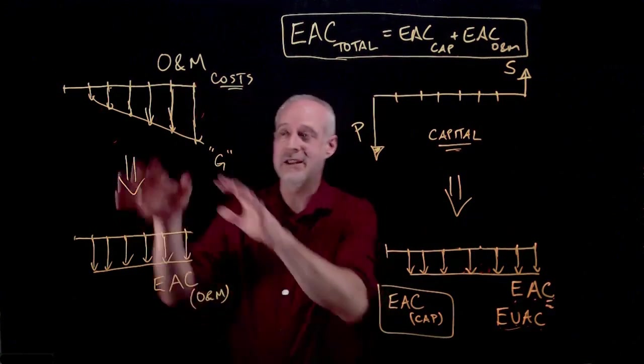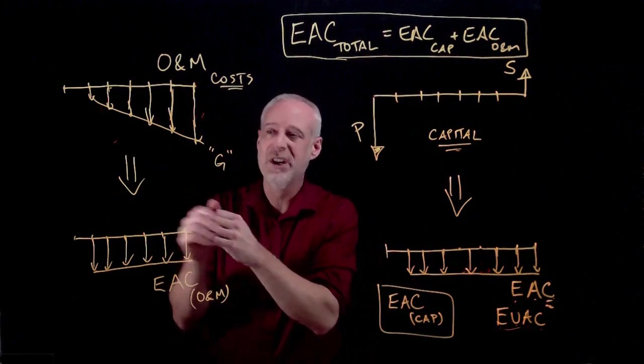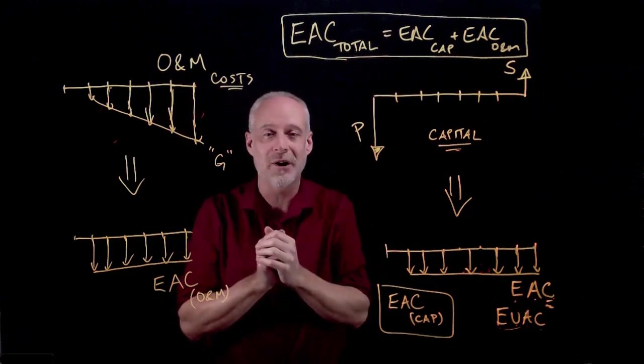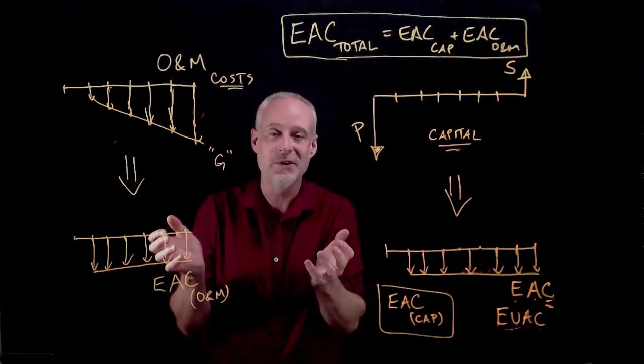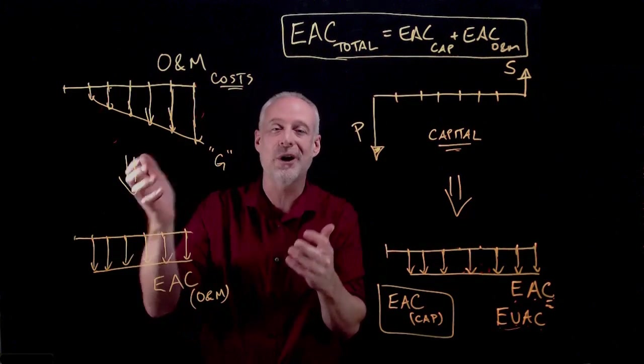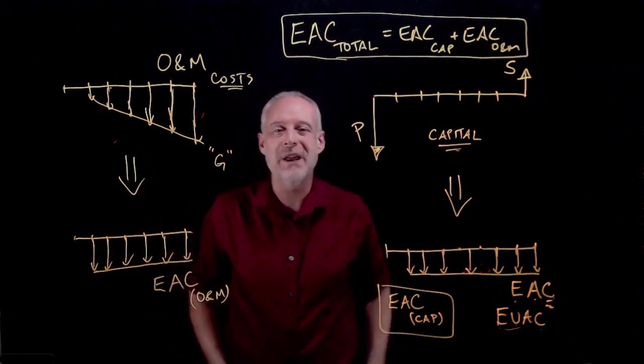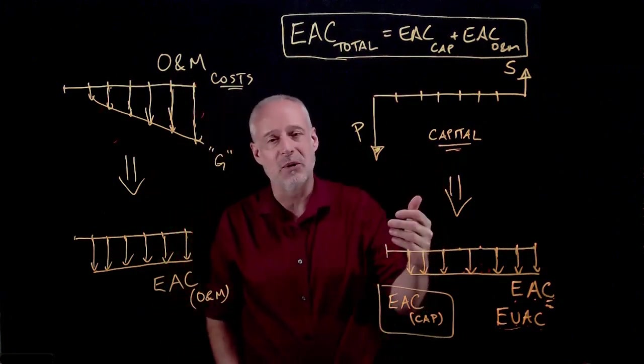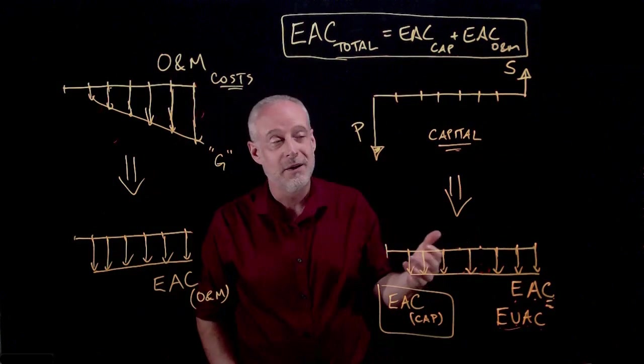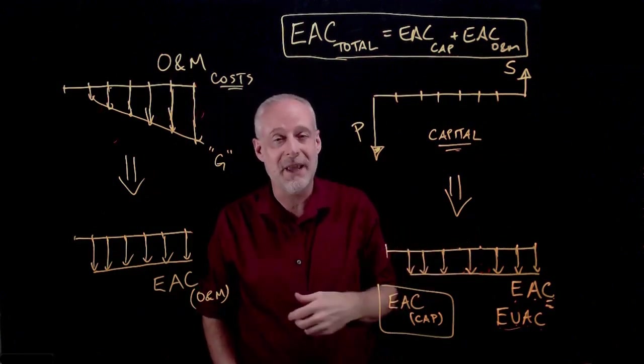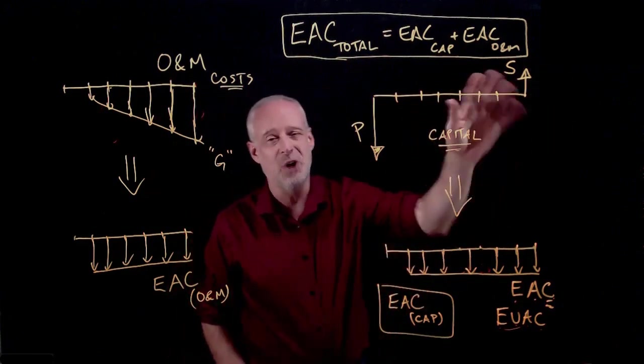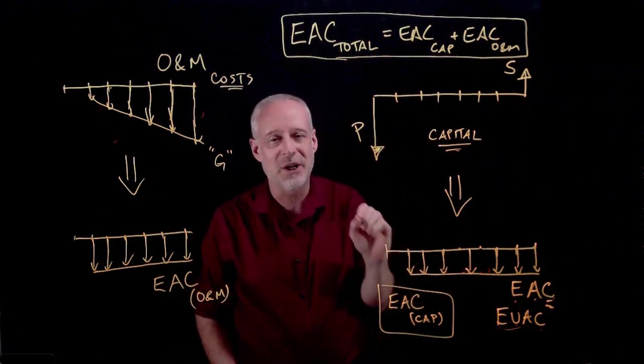Now, I already mentioned that in the operating and maintenance cost world, the longer you own an asset, typically the higher the operating and maintenance costs come. Like a car, like a police cruiser is a good example. The older your car gets, the more you tend to have to spend on it. On the other side, the EAC capital, the longer you own a car, the lower the EAC capital goes. So if you forget about the salvage value for a second, it complicates it a little bit, but not too terribly much.